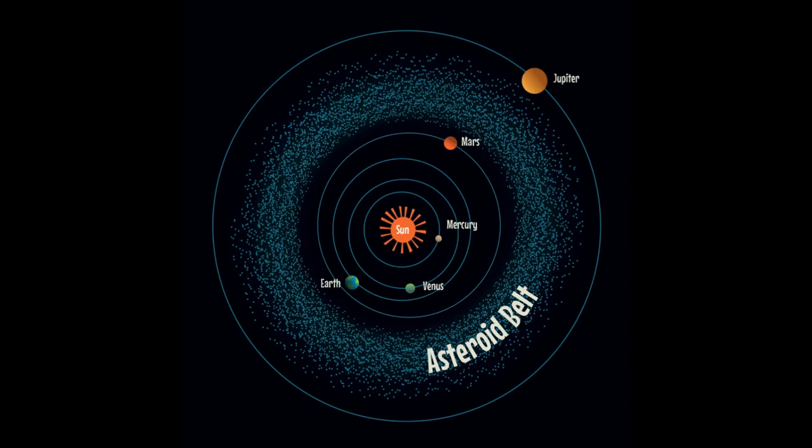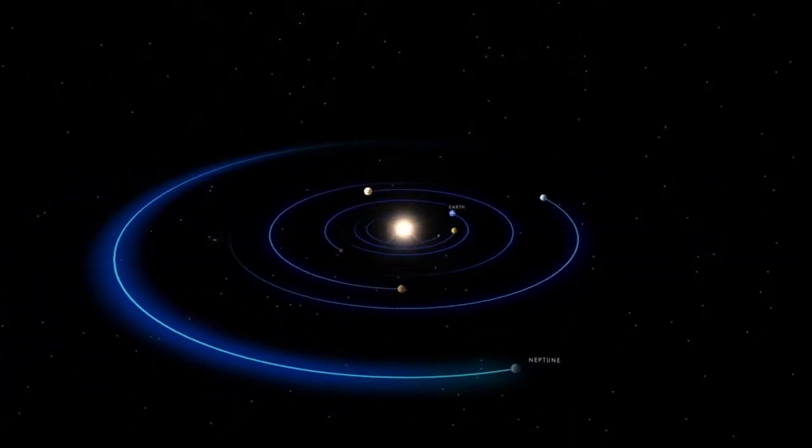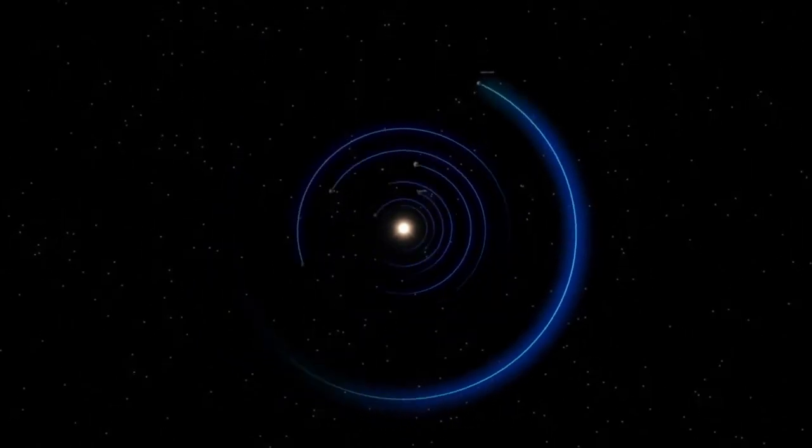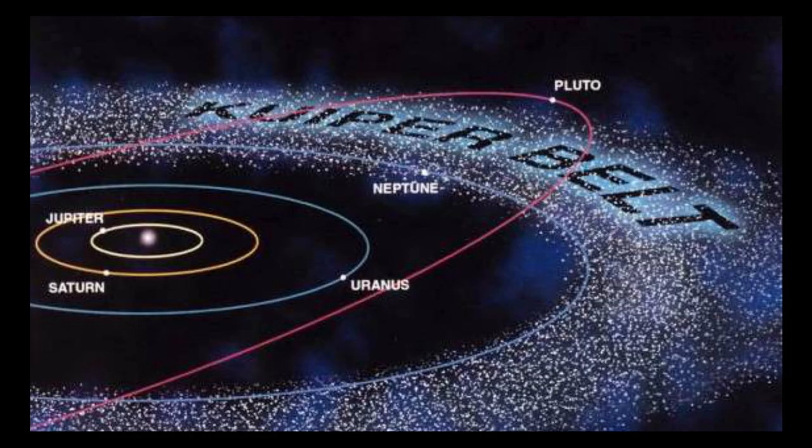The solar system has an asteroid belt. It also has a Kuiper belt, which is a type of asteroid belt.